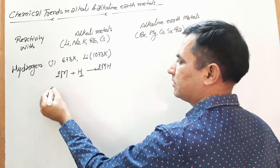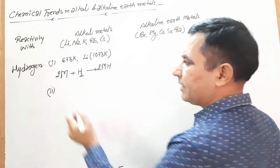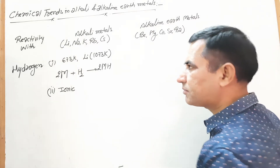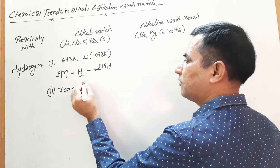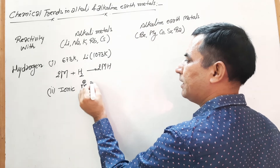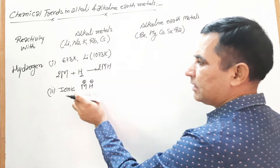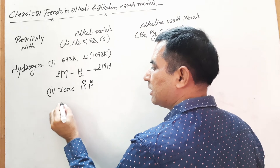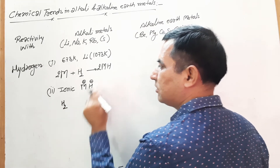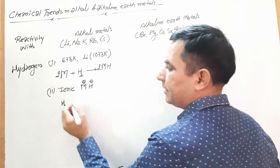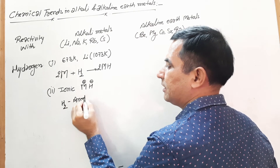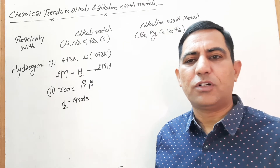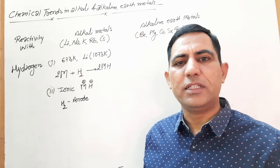These metal hydrides are ionic in nature, present in solid form as M⁺ and H⁻ ions. When these are electrolyzed under the influence of electric current, hydrogen gas is liberated at the anode. The liberation of hydrogen gas at the anode indicates that hydrogen is present in the form of H⁻ ions.